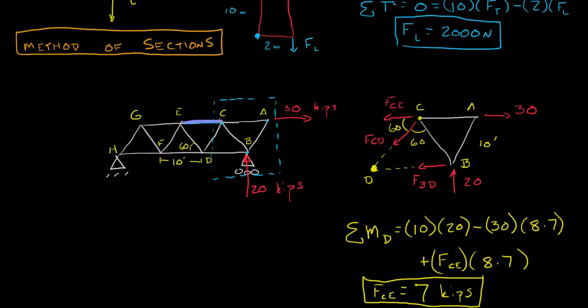And if you're careful, you can also see that this is why we generally cut our unknown and two additional members. Because if you cut two additional members, those members are going to meet somewhere, and you can take a moment about that point. Hope this clarifies the use of the method of sections. Good luck in your practice problems. Thank you.